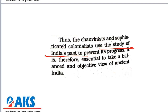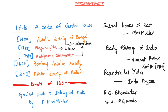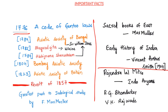Chauvinistic and sophisticated colonialists try to use the study of ancient India's past to prevent India from making progress. Therefore, it is essential to take a balanced and very objective view of ancient India. We have seen how the writing of history began when the British felt the need to understand Indian laws for administrative purposes, and how it slowly progressed — including the important books published and the contributions of Indian scholars. These are important facts for both prelims and mains. Kindly take a screenshot of this slide to remember what we have read, and we will continue with the next chapter.